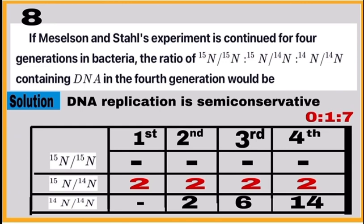Question number 8: Here you have to calculate the ratio of three types of DNA which are obtained during Meselson and Stahl's experiment after the fourth generation. The answer is 0:1:7. To get this answer, make the table as shown here.